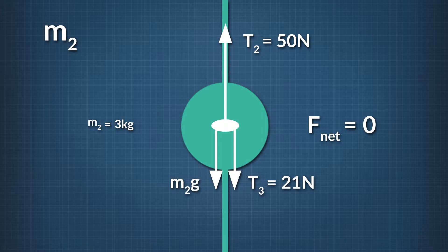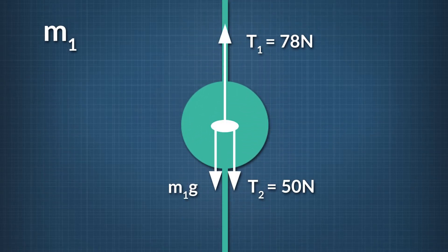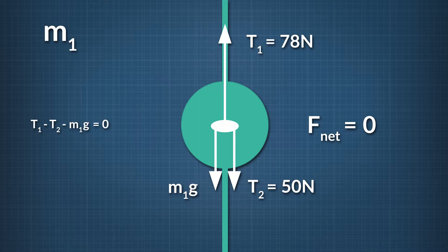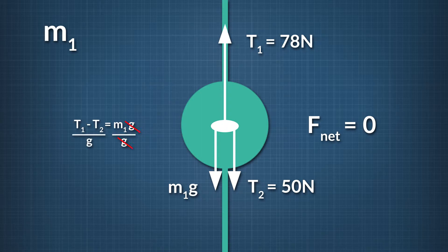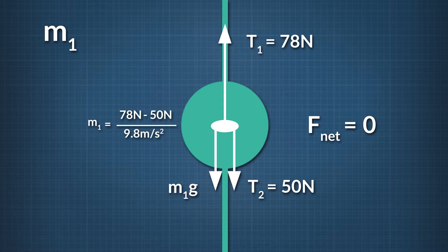Lastly, to solve for m1, let's look at a free-body diagram of the forces acting on this mass. Just like with the other masses, m1 is not moving, so the net force acting on it is zero. That means T1 minus T2 minus m1 times g equals zero. Solving, m1 equals T1 minus T2, all divided by g. Plugging in 78 newtons for T1, 50 newtons for T2, and 9.8 meters per second squared for g, we find that m1 equals 2.9 kilograms.